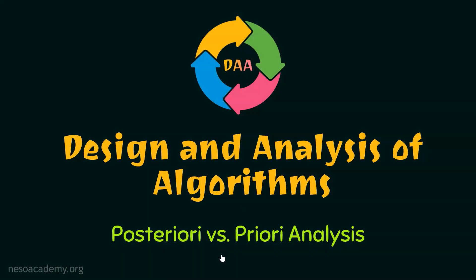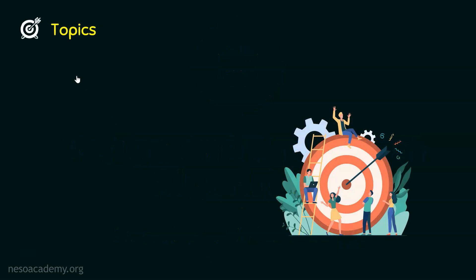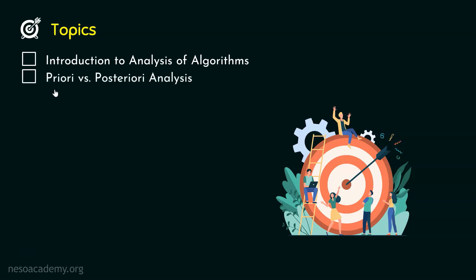In our previous presentations, we understood the difference between decidable and undecidable problems, and the nature of undecidable problems. In this lecture, we will understand the difference between two types of analysis of algorithms: posteriori analysis and priori analysis. We will first understand what analysis of algorithms is and why we analyze algorithms, then discuss the difference between priori and posteriori analysis.